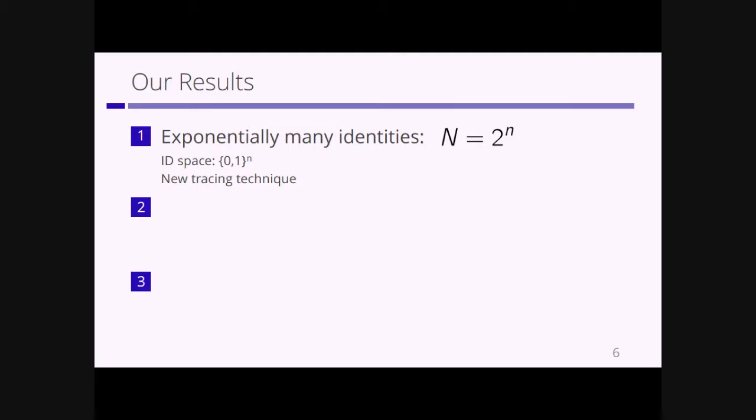In our paper, we achieve a traitor tracing scheme for exponentially many identities. This means capital N is 2^n — we can use n-bit strings as the identity space. To achieve this, we propose a new tracing technique.